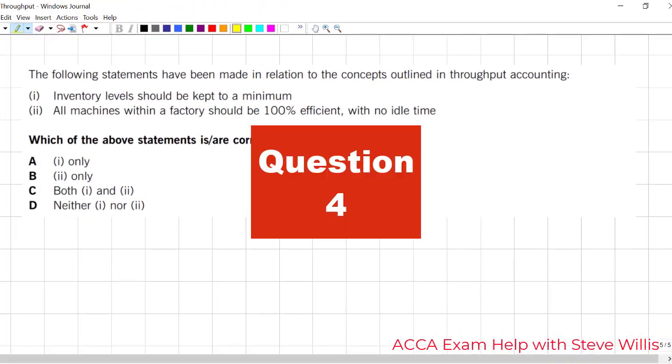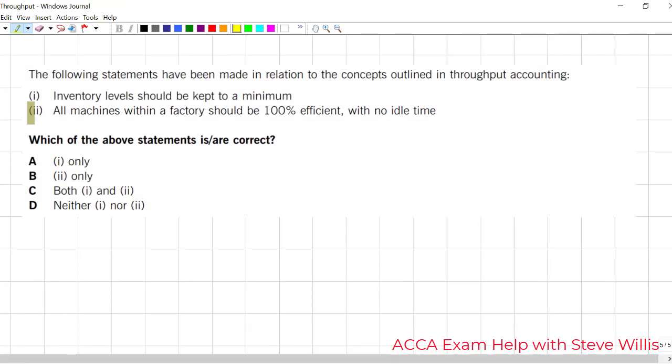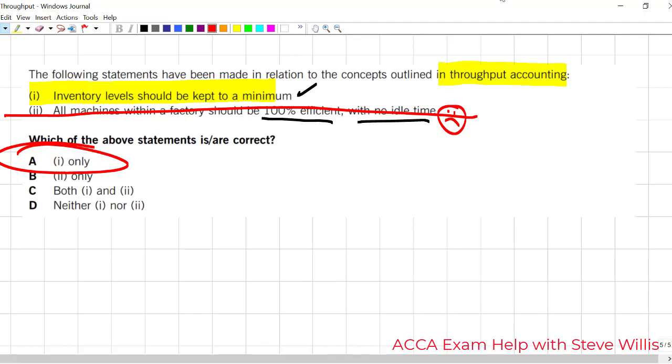The final question here in ACCA Classic, evaluate the statements. Which one is true? We're talking about throughput contribution. Inventory levels should be kept to a minimum. We like that. Throughput accounting assumes everything that we make, we sell just in time. So we do not want inventory lying around when we're following just in time, especially finished goods. And all machines within a factory should be 100% efficient with no idle time. Well, no, that is not part of throughput accounting. What we would like is to find and remove the bottleneck. So it's a continuous process of looking for the least efficient stage of production using continuous improvement and fixing that. It's never going to be everything 100% efficient. So statement 2 goes out. Answer is A.